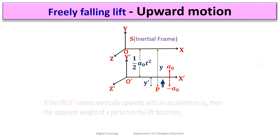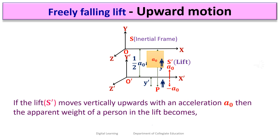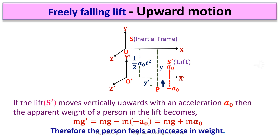If the lift moves vertically upwards with an acceleration A0, then the apparent weight of a person in the lift becomes mg' = mg minus m(minus A0) = mg plus mA0. Therefore, the person feels an increase in weight while ascending.